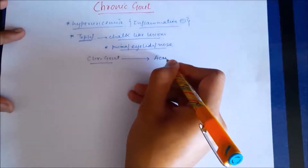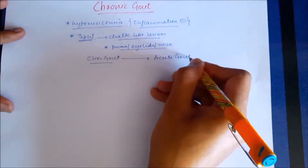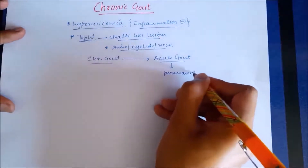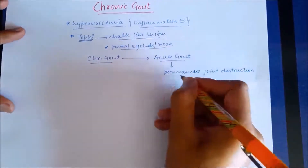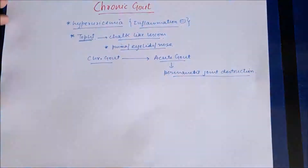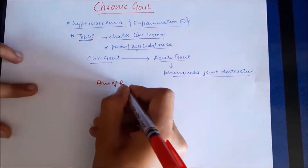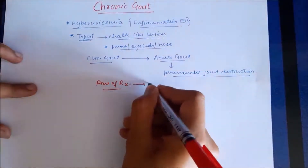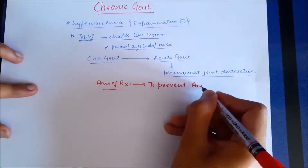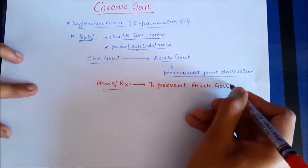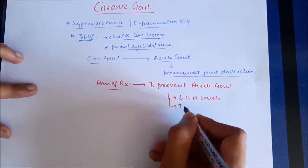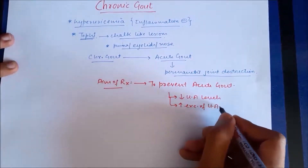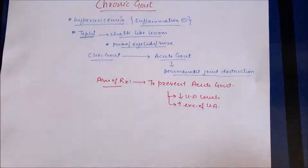The problem with chronic gout is that it can precipitate into an attack of acute gout, which causes permanent destruction of joints. So the main aim of treatment for chronic gout is to prevent its progression to attacks of acute gout, thereby preventing joint destruction. This can be achieved by decreasing uric acid levels in the blood as well as by increasing the excretion of uric acid.